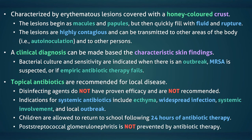Post-streptococcal glomerulonephritis is a potential complication of impetigo. It occurs when the pathogenic organism is a nephritogenic strain of group A beta-hemolytic streptococci. Unfortunately, it is not prevented by antibiotic therapy.